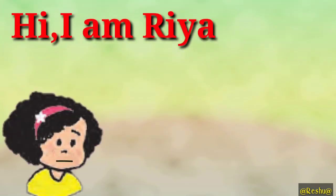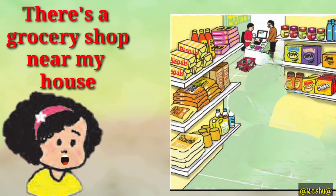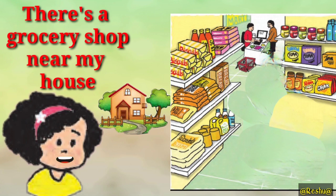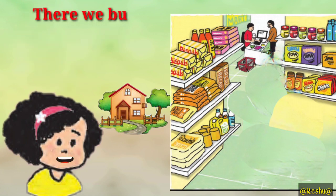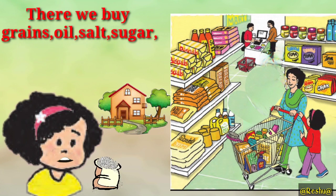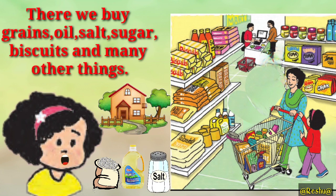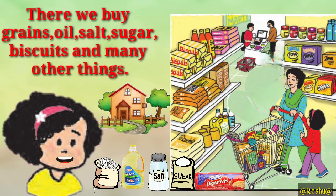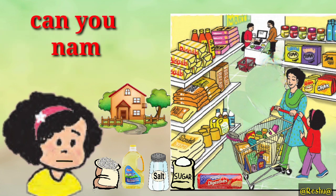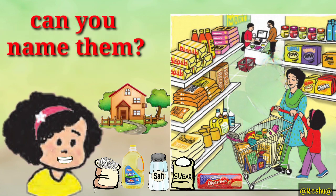Hi, I am Riyadh. There is a grocery shop near my house. There we buy grains, oil, salt, sugar, biscuits and many other things. Can you name them?